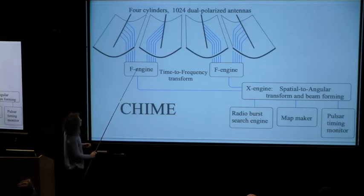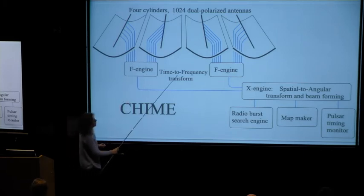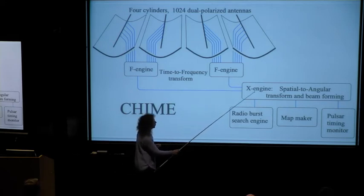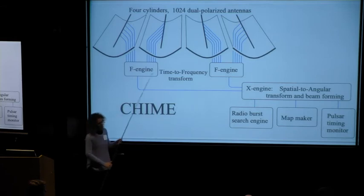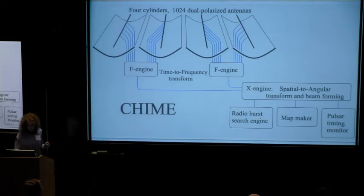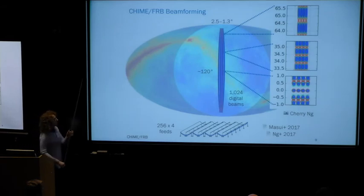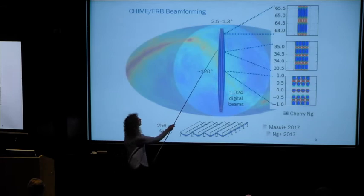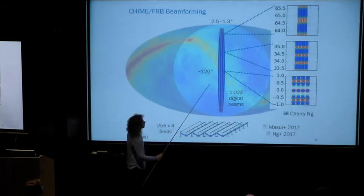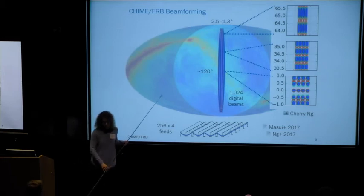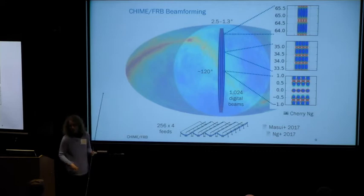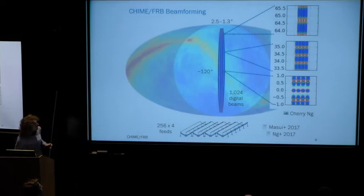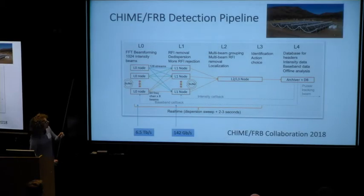CHIME was built and designed to do a cosmology experiment. The signals go to huts underneath the dishes for a time-to-frequency transform, then to the correlator in the shipping container, and the same data feed three different experiments — one is the FRB search, the other maps neutral hydrogen at high redshift. In the correlator, we form 1,024 digital beams on the sky. The beam width is about 2 degrees depending on frequency, and we cover 120 degrees north-south. The beams have interesting, highly declination-dependent shapes.